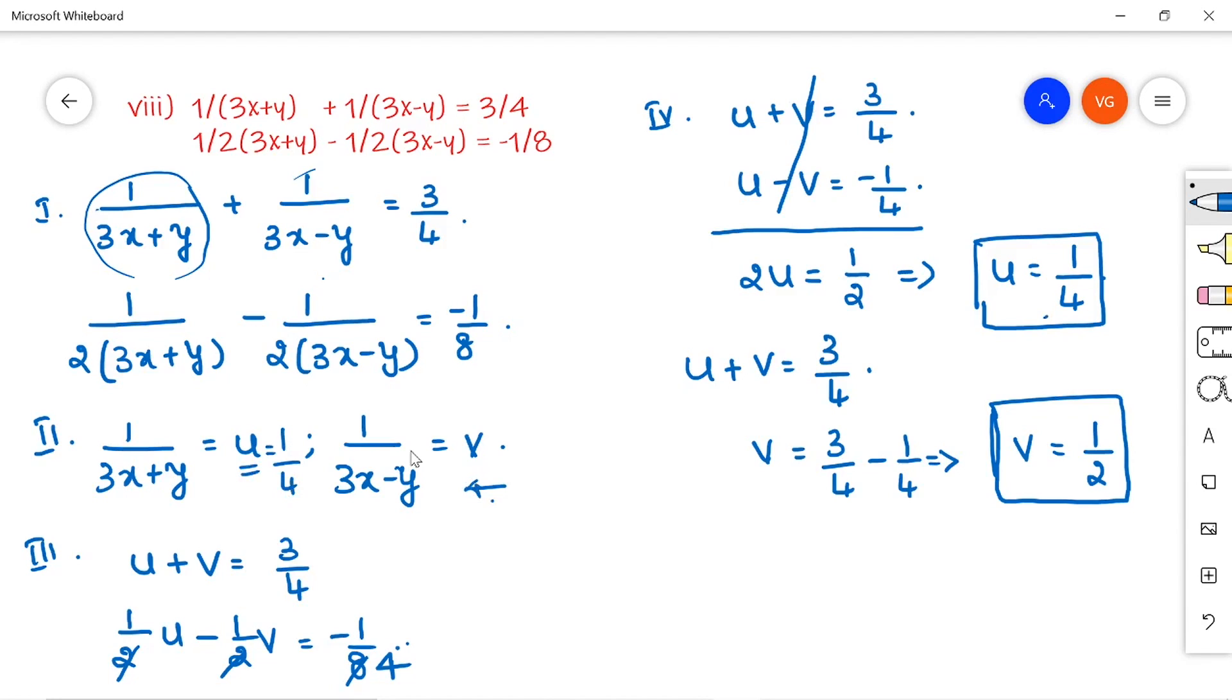This is equal to 1 by 4. That is nothing but 3x plus y is equal to 4, and 3x minus y is equal to 2.